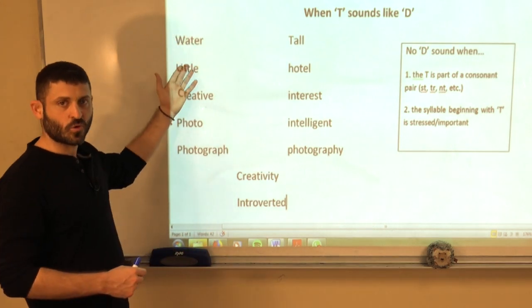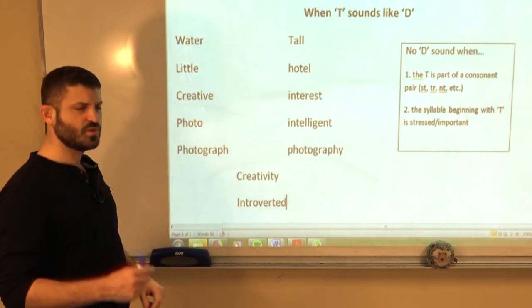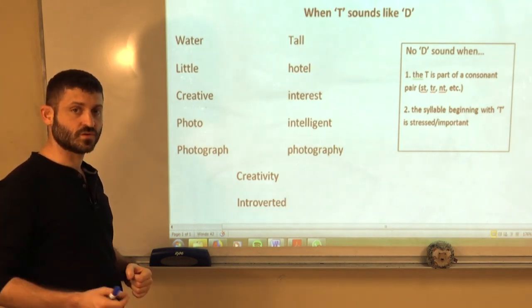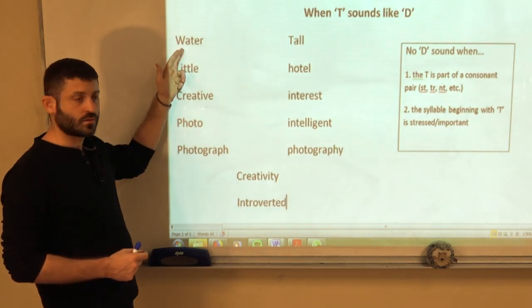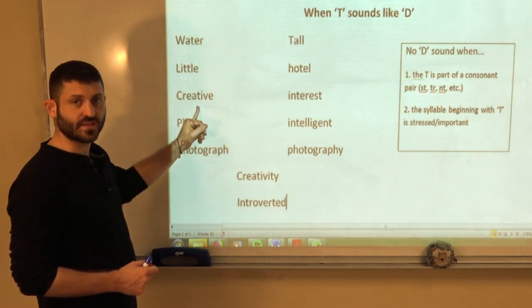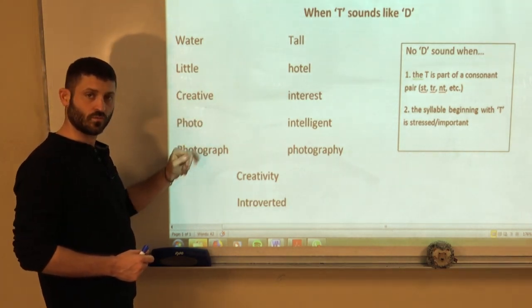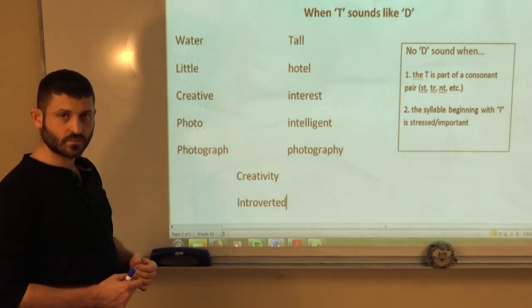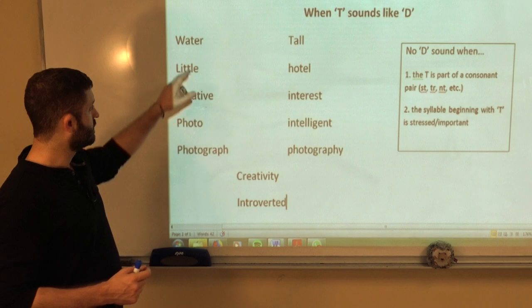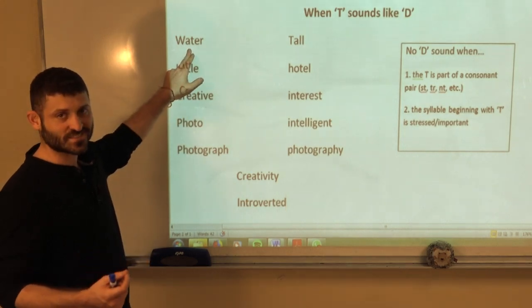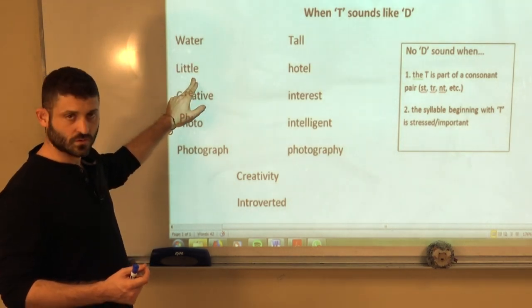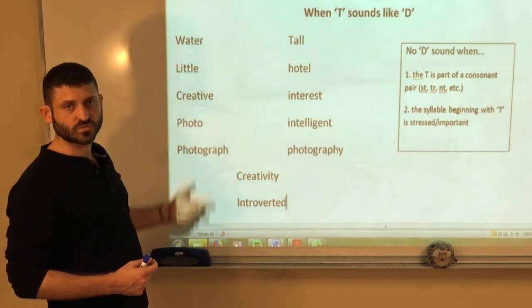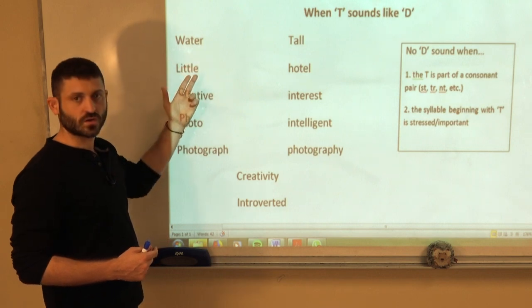So notice this list of words here on the left. Notice the D sound. Maybe you can say them to yourself. Repeat them after me. Water. Little. Creative. Photo. Photograph. You notice the D sound? And notice in British English they would say the T sound. Water. Little. But this is an American English style. In these words we pronounce this T as a D. Water. Little.